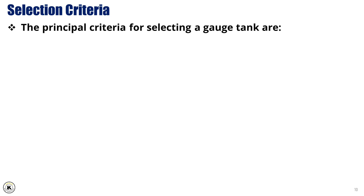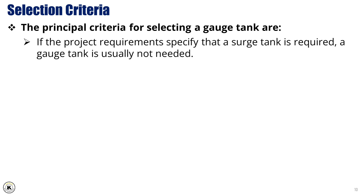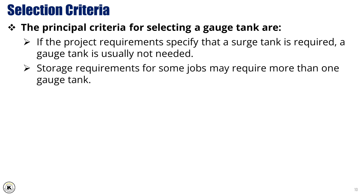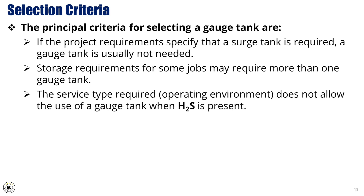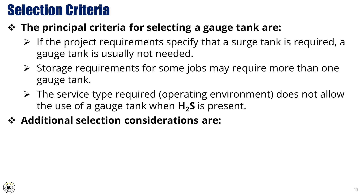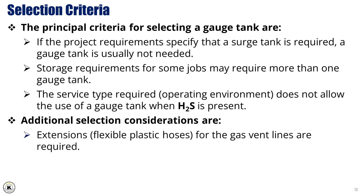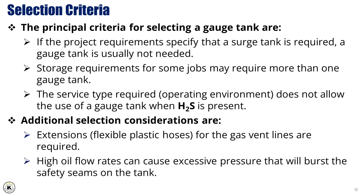Selection criteria. The principal criteria for selecting a gauge tank are: if the project requirements specify that a surge tank is required, a gauge tank is usually not needed. Storage requirements for some jobs may require more than one gauge tank. The service type and operating environment do not allow the use of a gauge tank when H2S is present. Additional considerations include extensions — flexible plastic hoses for the gas vent lines are required, and high oil flow rates can cause excessive pressure that will burst the safety seams on the tank.